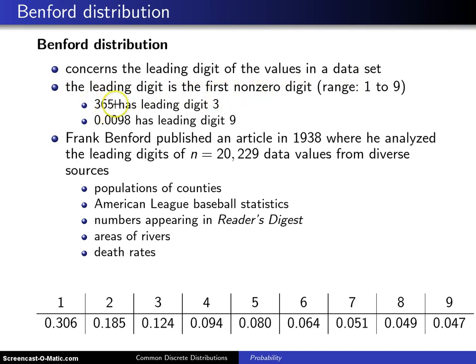For example, with the number 365, the leading digit going from the left is 3. If you have a data value of 0.0098, you start from the left and the first non-zero digit you encounter will be 9.